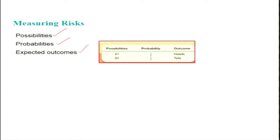Regarding possibilities — what are the possible outcomes when you make an investment? This can be explained using the example of tossing a coin. When you toss a coin, what are all the possible outcomes? Obviously, there are only two, because the coin can come down either heads or tails.